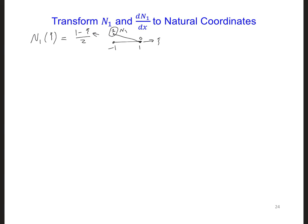And if we plug in plus 1, we get a value of 0, which is what we expect for the second node. So this equation checks for being the correct interpretation of this interpolation function for the first node.